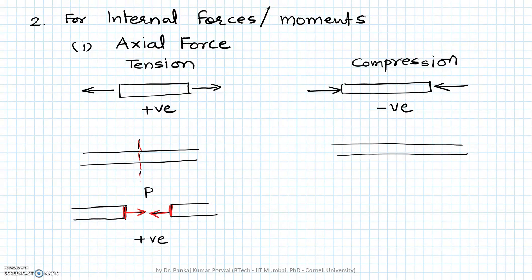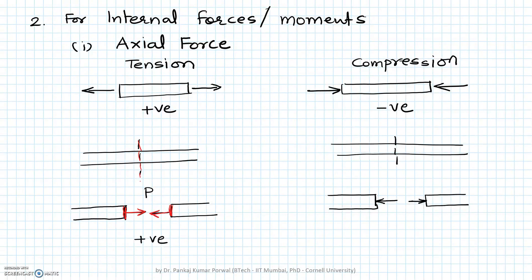Similarly, for a member in compression, when we cut the member at any cross section and expose two surfaces, the compressive force on the right face will have an arrow pointing in the left direction and the left face will have an arrow pointing in the right direction. Both of these denote negative force. So when drawing a free body diagram for a segment, we have to be careful to show the positive direction for axial force.